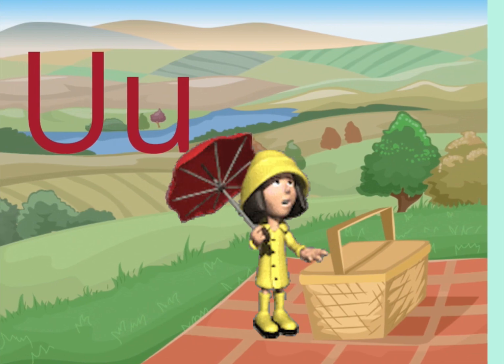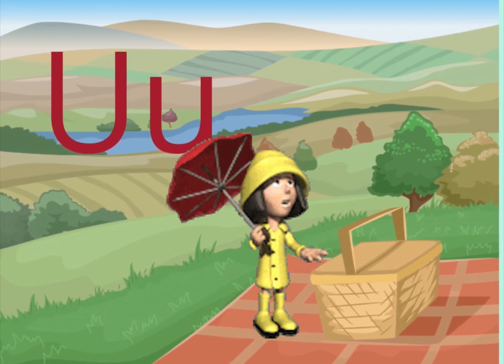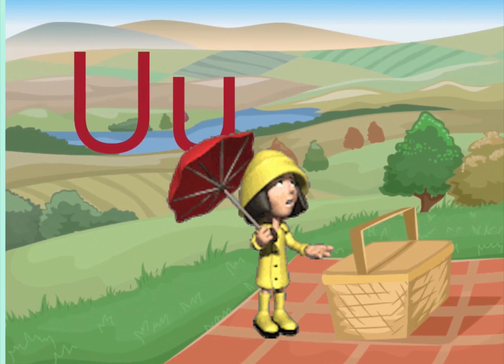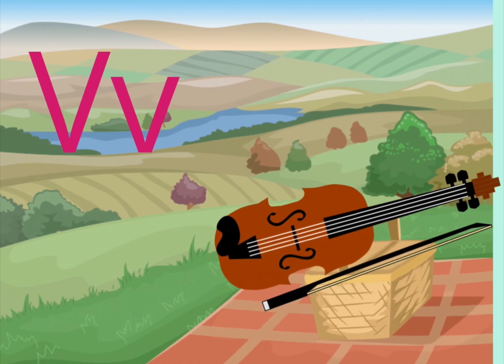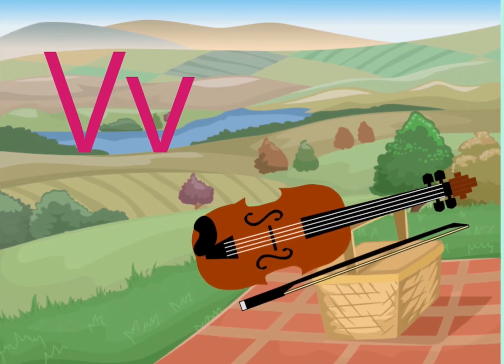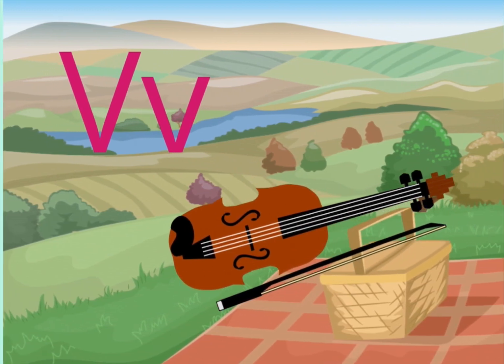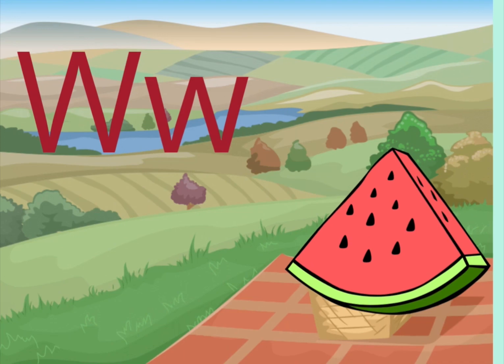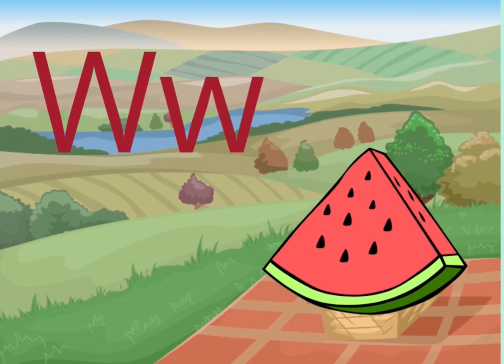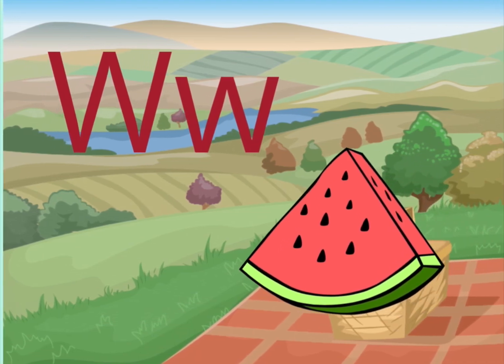U is for umbrella. V is for violin. W is for watermelon.